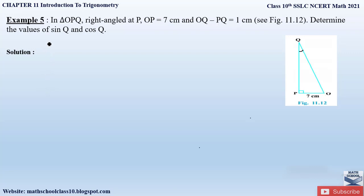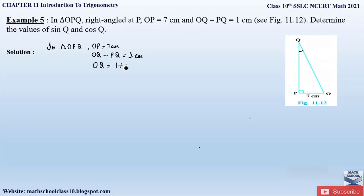Let us write down what is given in the question. In triangle OPQ, OP is equal to 7 centimeters and OQ minus PQ is equal to 1 centimeter. From what is given, let us send PQ to the right-hand side, so OQ will be equal to 1 plus PQ. Let this be equation number 1.